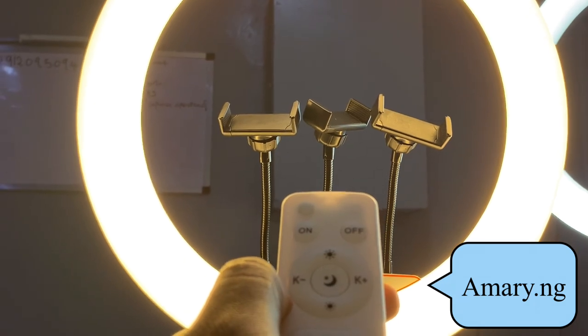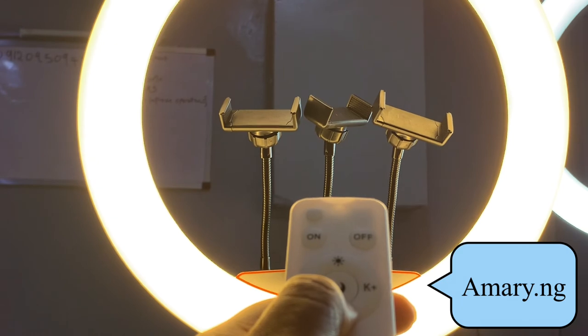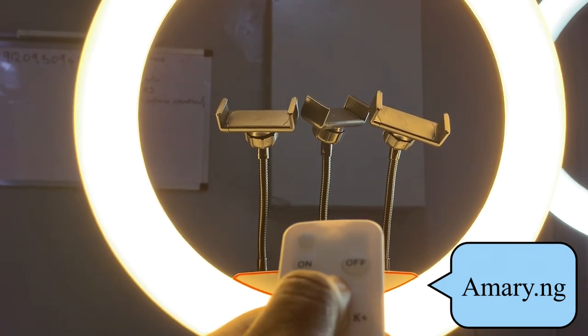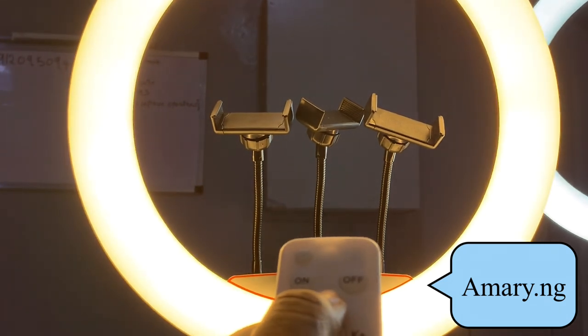the 18-inch ring light has three different phone holders. So if you want to like put different phones and get like different angles. And the buttons surrounding it is just to increase and reduce the brightness. Nothing more, nothing less.